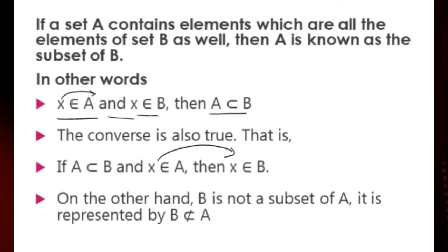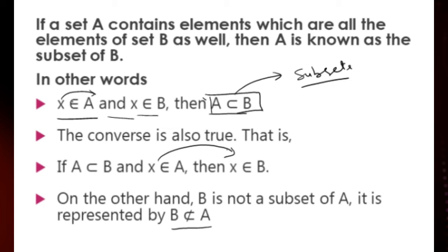On the other hand, if B is not a subset of A, it is represented as 'B is not a subset of A.' The symbol used here represents the subset relation, so A is a subset of B is read using that symbol. And where A is a subset of B, then B is known as the superset of A.